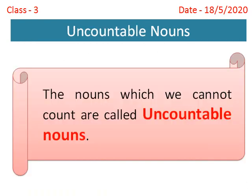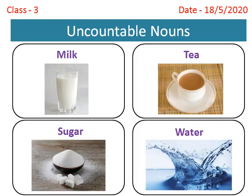Now, we will learn about uncountable nouns. The nouns which we cannot count are called uncountable nouns. For example, milk, tea, sugar, water etc. We never say one milk, one tea, one sugar or one water. So, they are uncountable nouns.